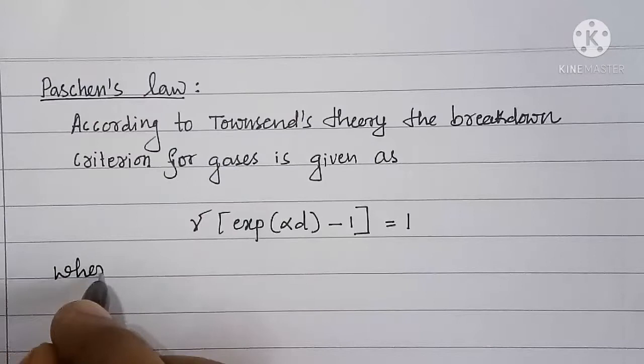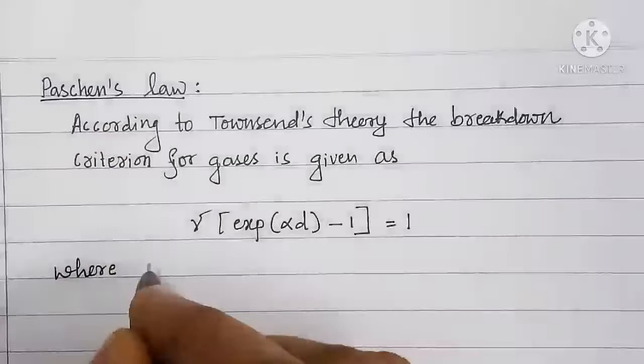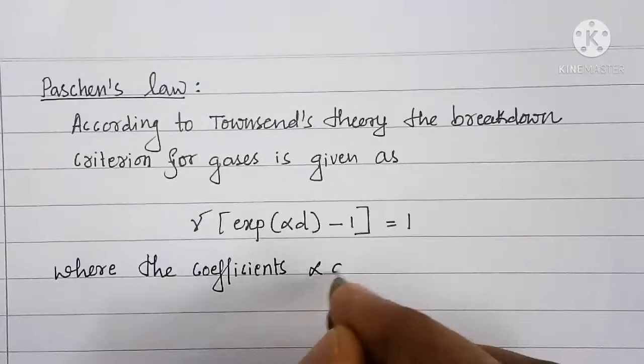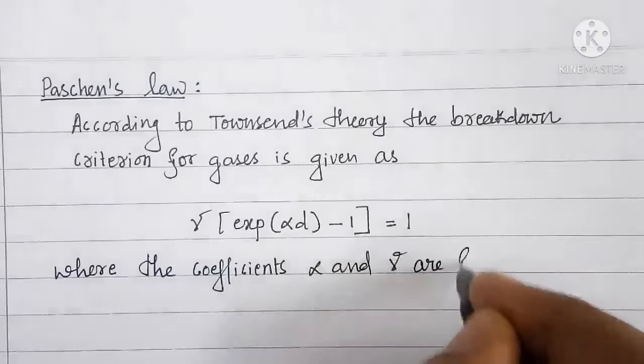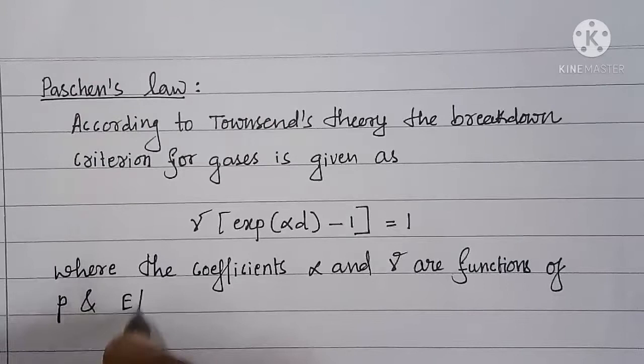And we also know that this alpha and gamma are the functions of pressure P at which the gas between the electrodes is maintained, and E by P ratio, where E is applied field. Where the coefficients alpha and gamma are functions of P and E by P.